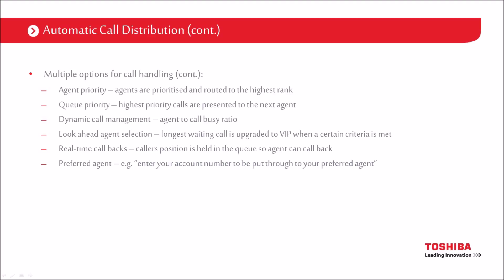We can look at dynamic call management — the agent-to-call busy ratio. In other words, if we've got more calls in the queue than we can answer with our standard agents, we can do something about it: raise an alarm, or interflow a second queue into the first queue — anything that actually helps us manage and bring forward the ability to answer. We can also do look-ahead agent selection, so the longest waiting call is upgraded to VIP when a certain criteria is met.